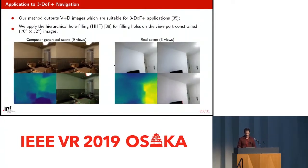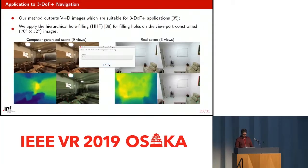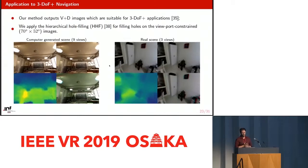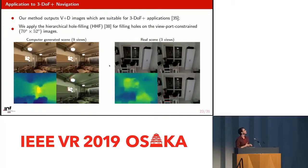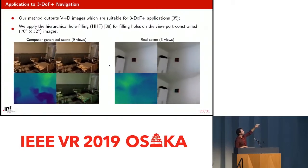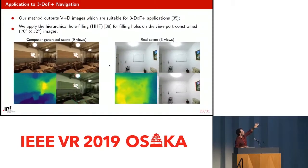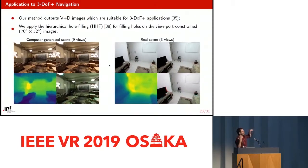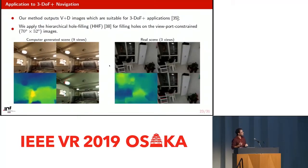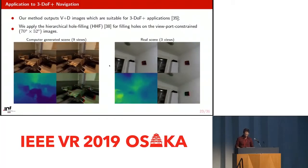These are some results on the three degrees of freedom plus application. We are rendering the left image and the right image for the left and right eyes, the estimated depth map, and the anaglyphs. These are two examples.